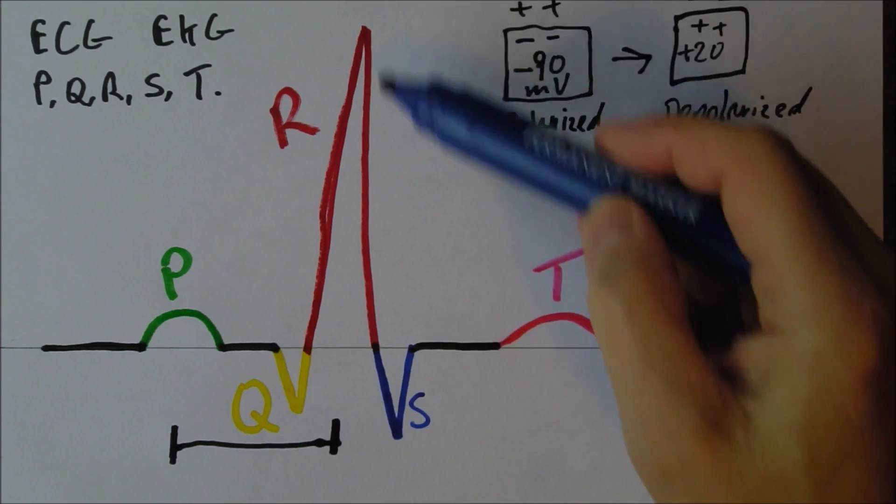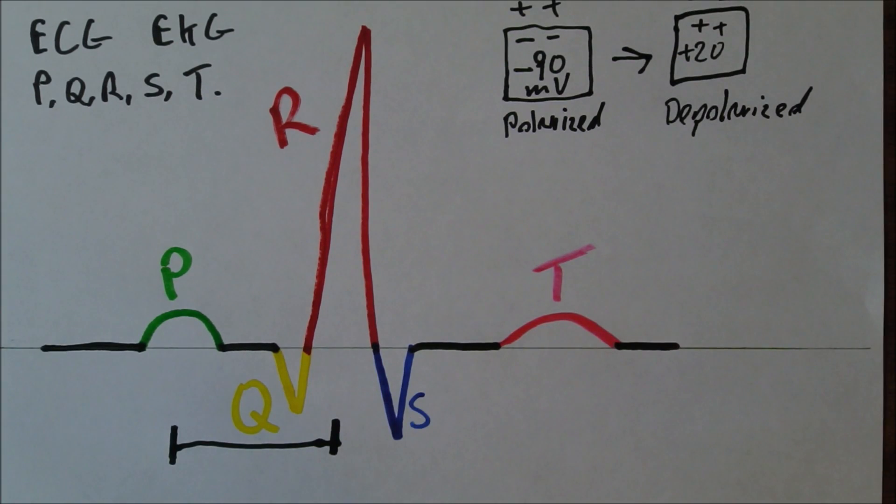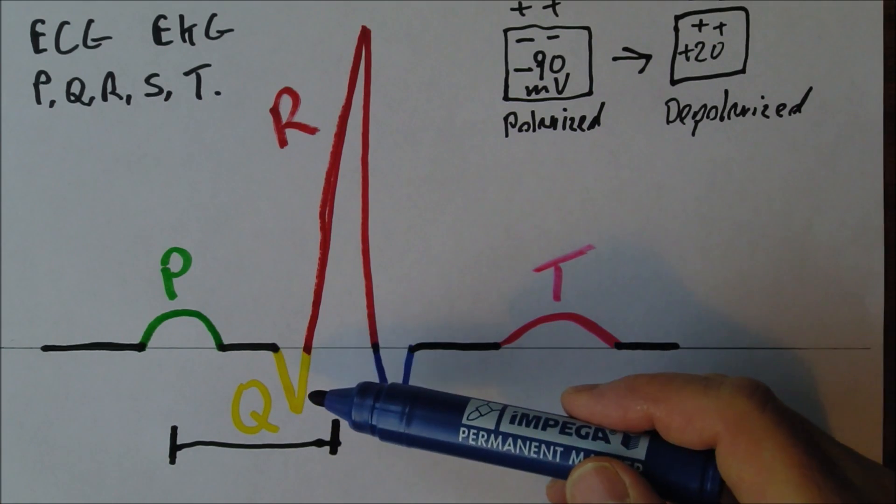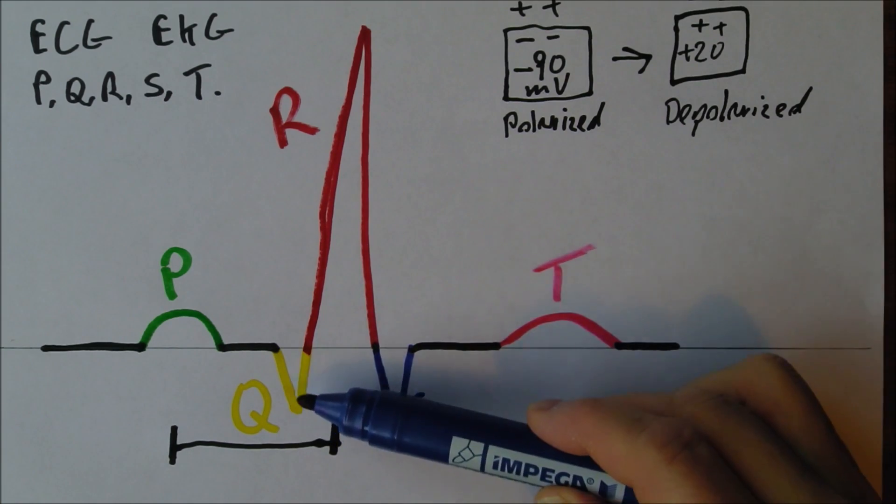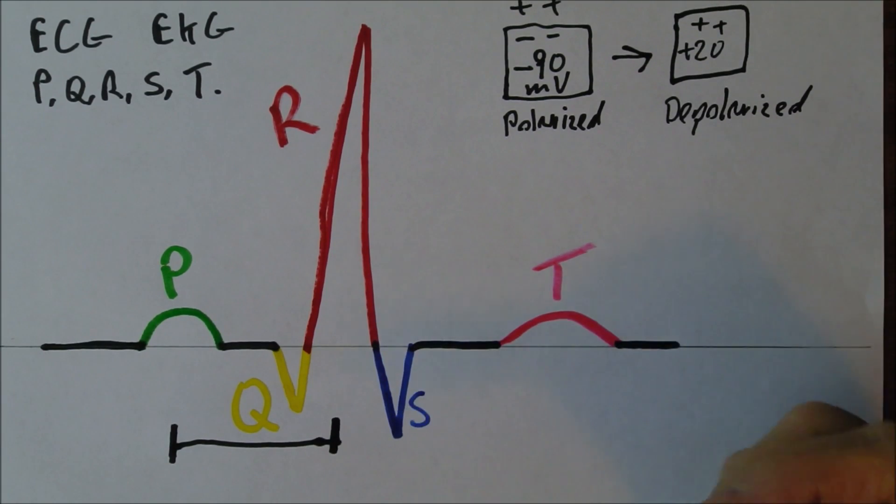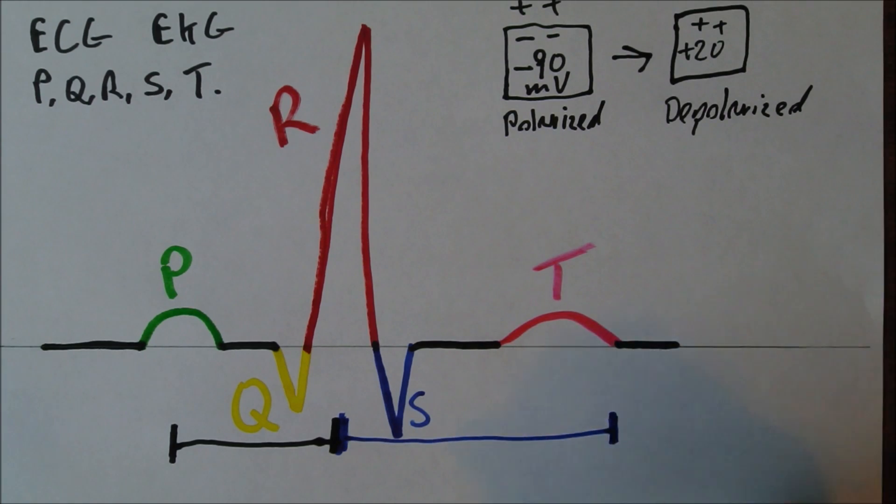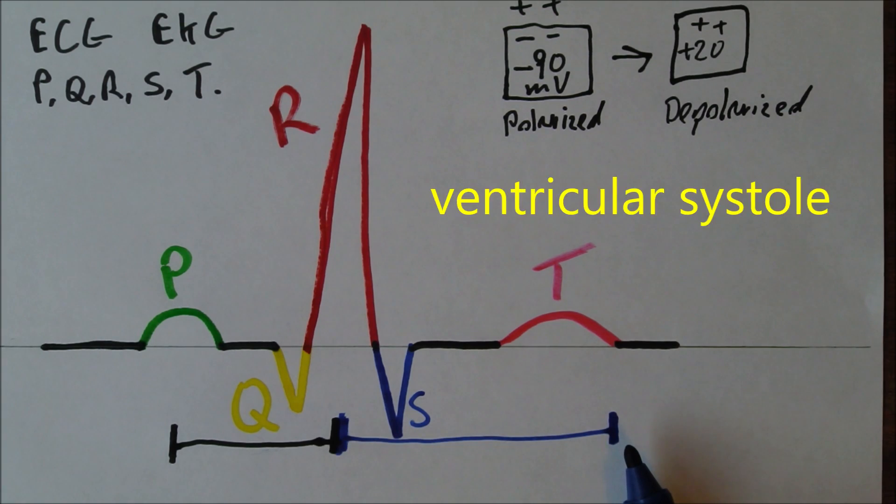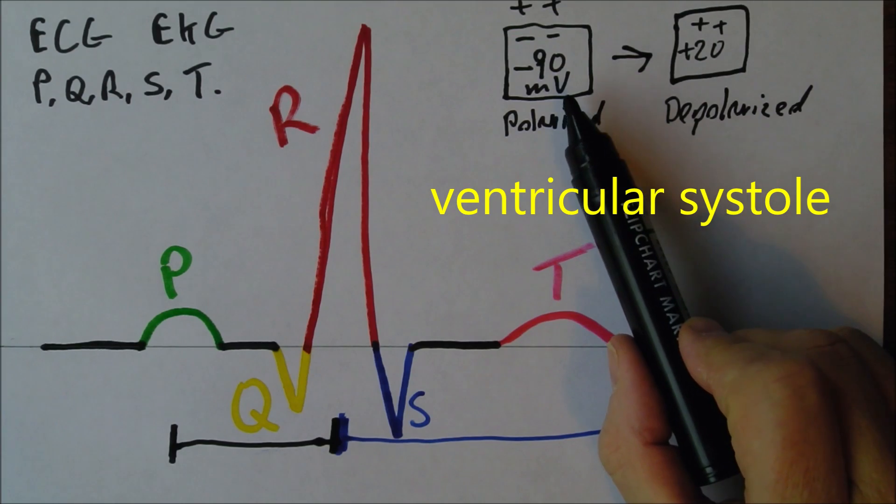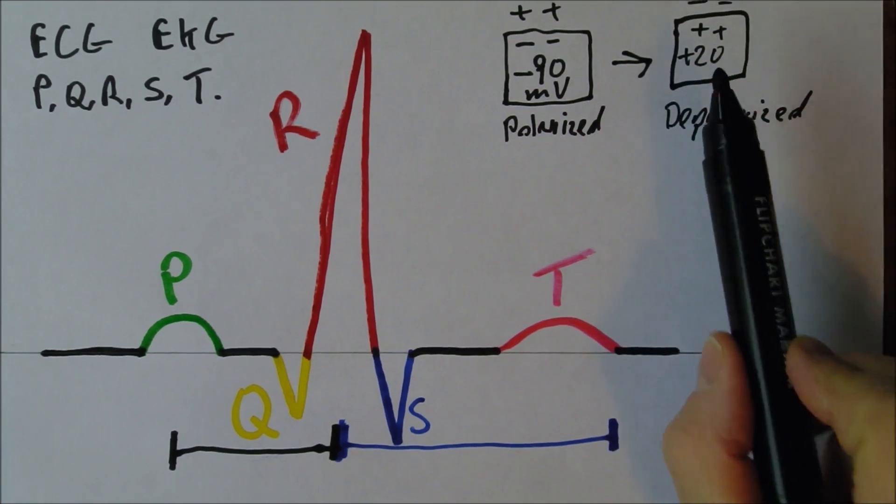Now the QRS complex is the depolarization of the ventricular myocardium. And the depolarization of the ventricular myocardium will initiate the contraction of the ventricular myocardium which will take place during this period of time here. So first we have atrial systole. So first we have atrial systole and then the contraction of the ventricular myocardium ventricular systole. And all that muscle contraction is stimulated by the depolarization.